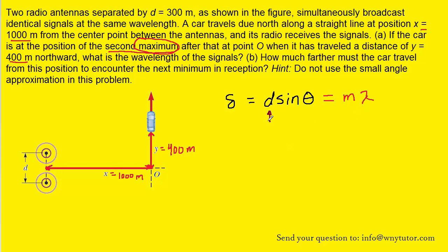Now d was actually the distance between the two sources of waves, and that was actually given to us in the question. We could have labeled that at the beginning, in fact, but that was equal to 300 meters, so we can include that. So we have d. The m can vary. That can be a number anywhere from 0 to 1 to 2 to 3, basically any positive or even negative integer.